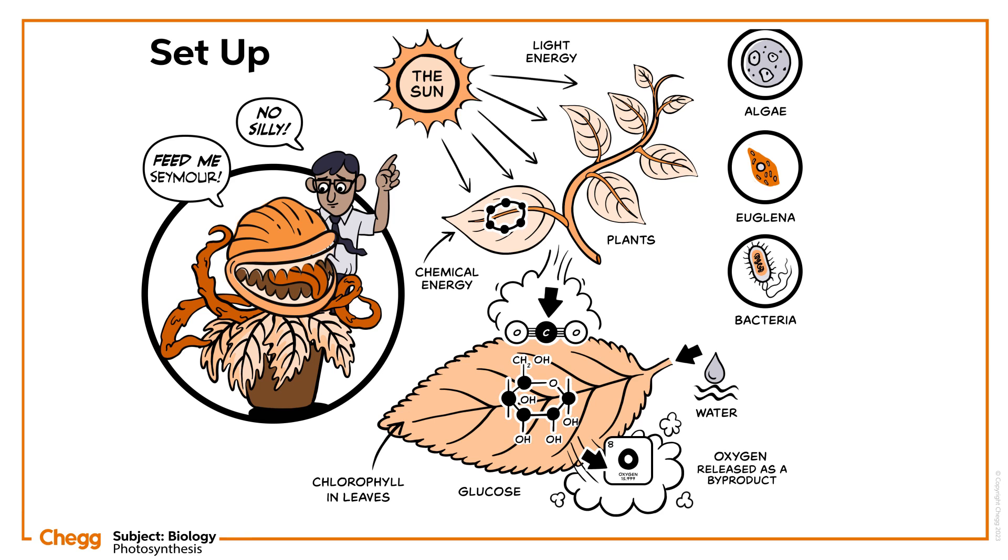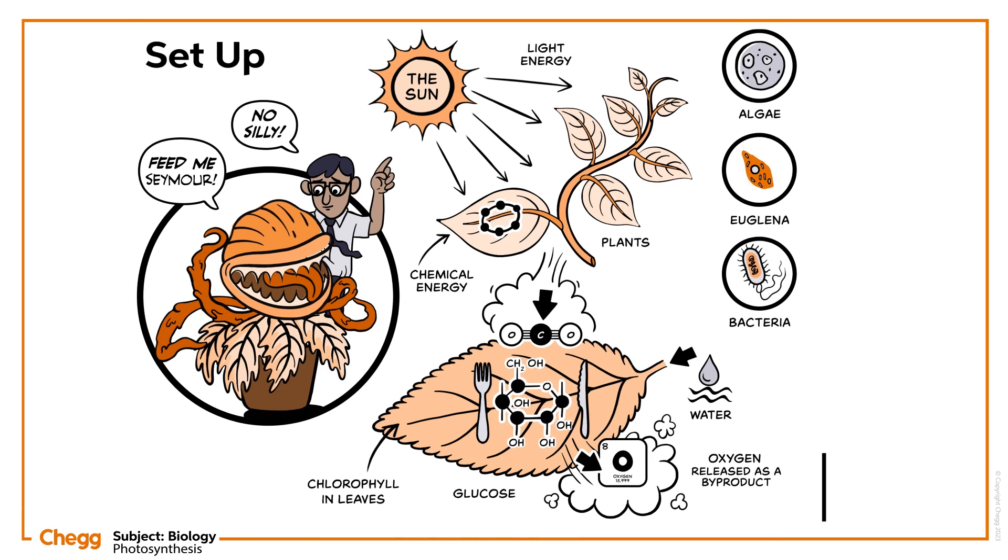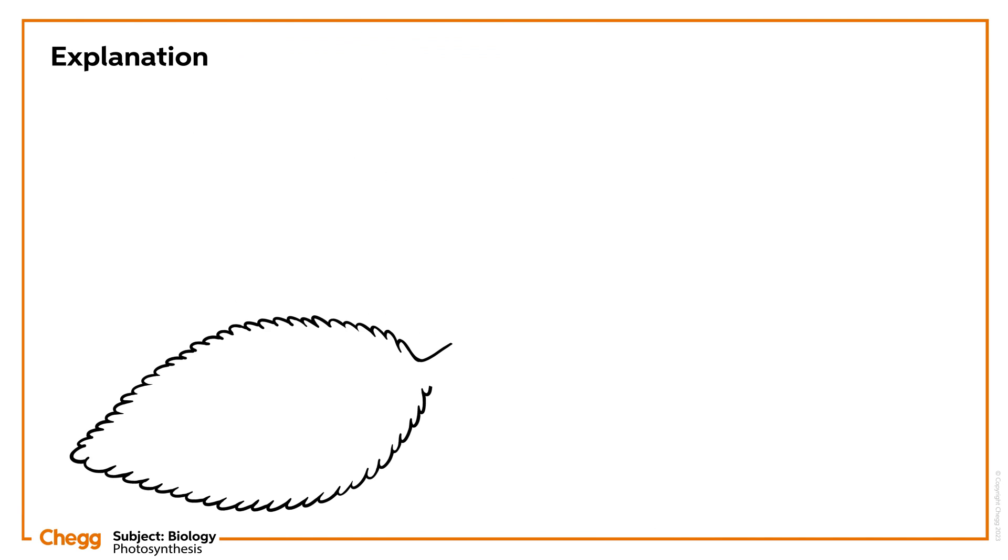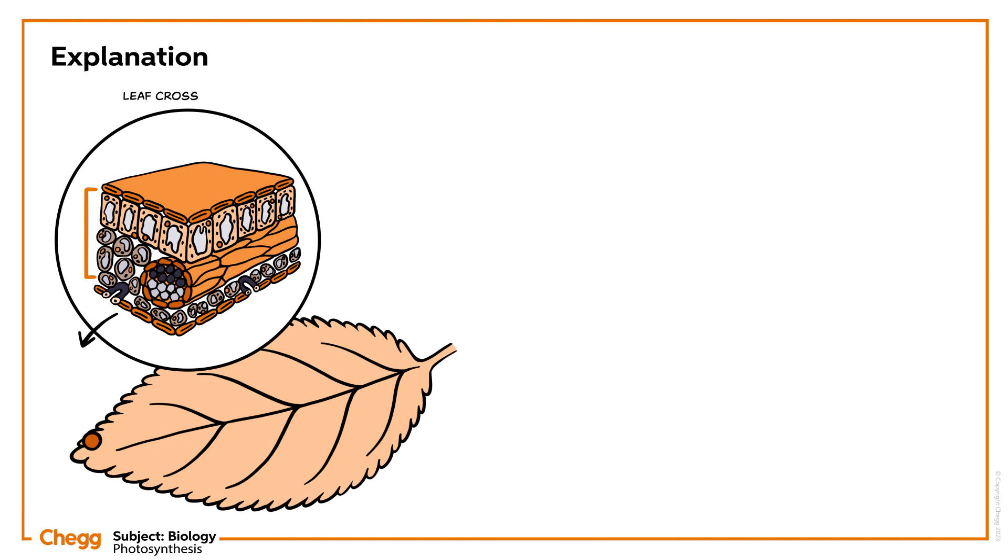After this conversion, the glucose molecules act as fuel to perform various activities inside the cell. The process of photosynthesis takes place in the green parts of the plant. The green parts of the plant are the specialized cells, known as mesophylls.